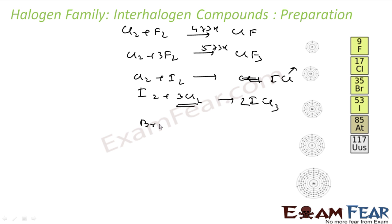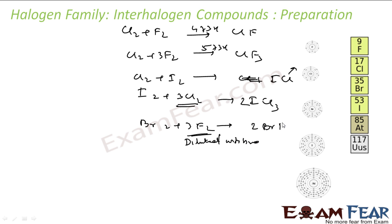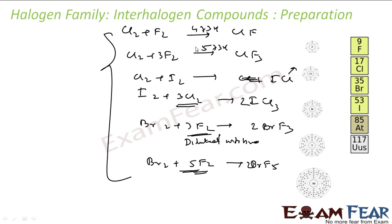Similarly, bromine reacts with fluorine diluted with water to give 2BrF3. With excess fluorine, bromine and fluorine give BrF5. So the lesson is you get interhalogen compounds by heating two different halogens, and depending on which one is in excess and the temperature, you get different types of interhalogen compounds.